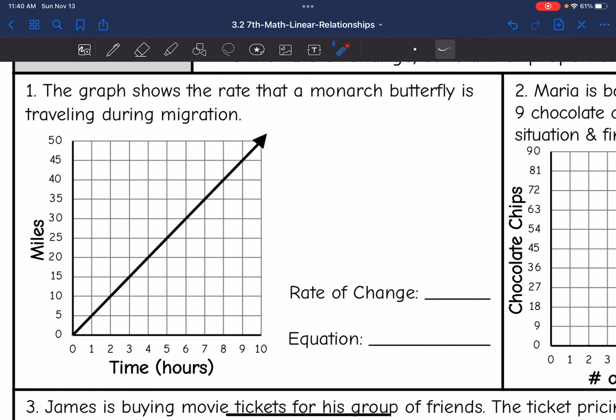So let's look at number one. It says the graph shows the rate that a monarch butterfly is traveling during migration. So I see several ordered pairs on this graph. I'm just going to choose this one right here, 1, 5, to find my k constant of proportionality slash rate of change.